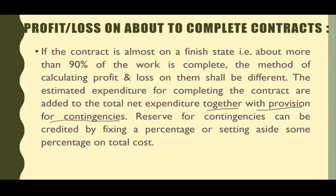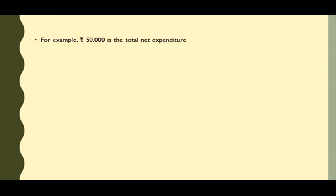Toh ye jo reserve for contingency banaya jata hai, ye credit kiya jata hai by fixing a percentage, or setting aside some percentage on total cost. Hum samjhenge abhi aage, ki ye reserve for contingency kaise banaya jata hai. Maan lijiye aapko example diya hua hai ki 50,000 jo hai, woh total net expenditure hai, up to the year 2015.